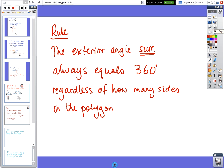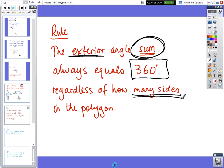OK, so there's a special rule, the exterior angle sum, sum means when you add them up, always equals 360. And it does not matter, it does not matter how many sides, it always adds up to 360, the exterior angle sum. OK, sum means when you add them up. So copy that down, come across and we'll see how we use it.